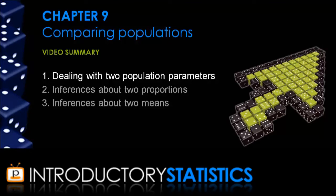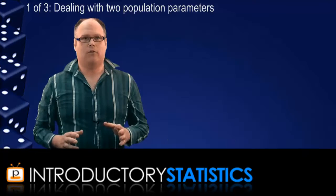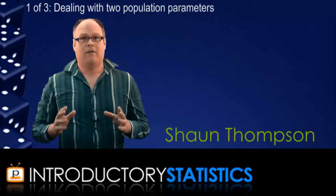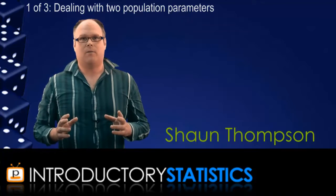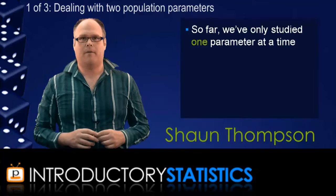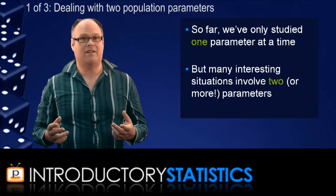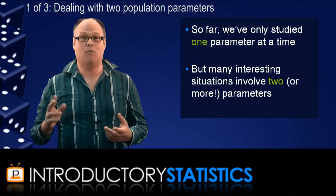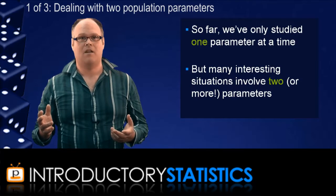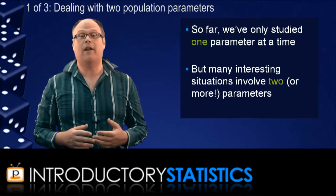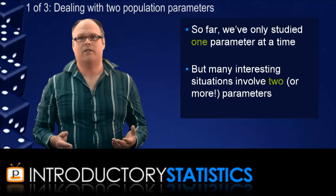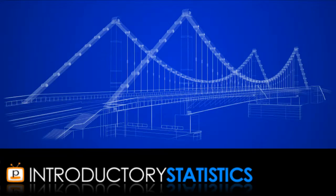We'll start by looking at when and how we deal with two population parameters. For the situations we've looked at thus far in this series, we've only ever looked at ones where there is one population parameter that we're trying to find out about. But many of the more interesting situations in statistics involve two or more unknown parameters.